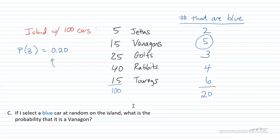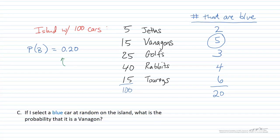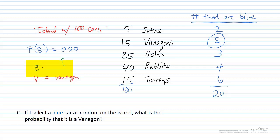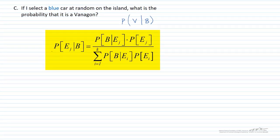The last part asks: if I select a blue car at random on the island, what is the probability that it is a Vanigan? I'll introduce event V = it's a Vanigan, and B = it's a blue car. So given that I've selected a blue car, what's the probability that it's a Vanigan? Recognizing how to write these things is one of the most important steps — we want P(V | B). Whenever you're talking about conditional probability, you should think about the multiplication rule, the total probability rule, and in particular Bayes' Theorem, which is given by this equation here.